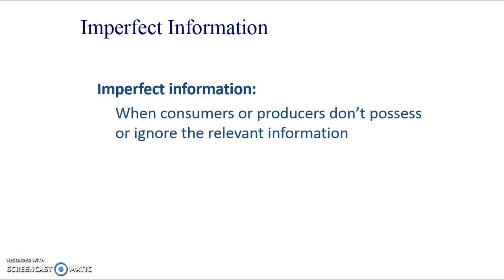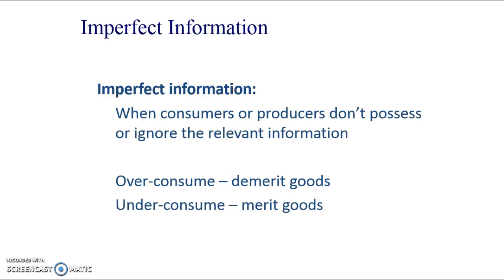Imperfect information is when consumers and producers don't possess or ignore the relevant information. You can probably relate this back to merit goods and demerit goods. They're either going to over-consume because they just don't have all the information that the item is bad for them, or they're ignoring it, or they under-consume — this is the case with merit goods, when they don't fully realise the positive effects. They may not consume as much as they should, or they over-consume because they're not taking into account external benefits and external costs that occur to third parties.